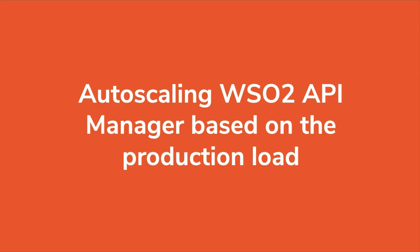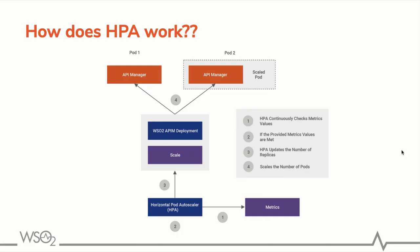The first part of the demo will be auto scaling WSO2 API Manager based on the production load. How does HPA work in Kubernetes? There is a built-in HPA controller that continuously monitors all the HPA objects and checks predefined metrics and target CPU utilization. If the target is exceeded, it will increase the number of replica sets to maintain an average CPU utilization across all the pods.